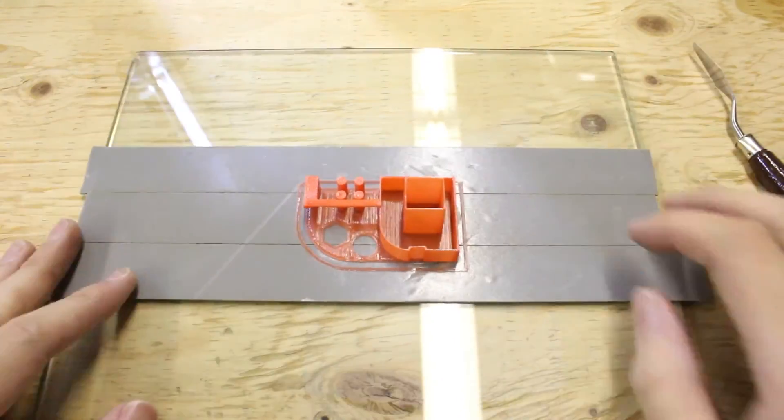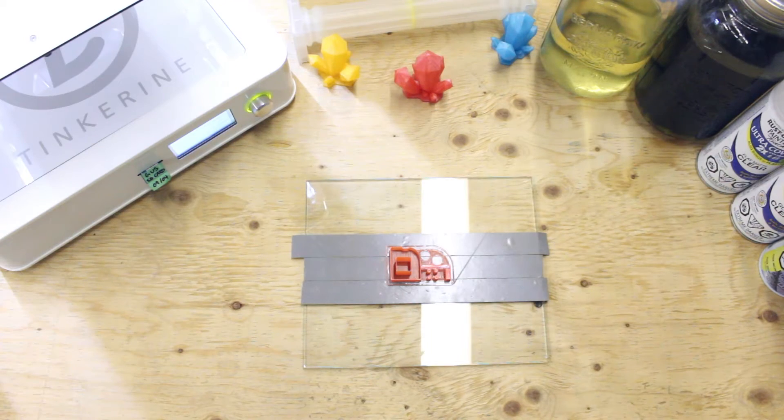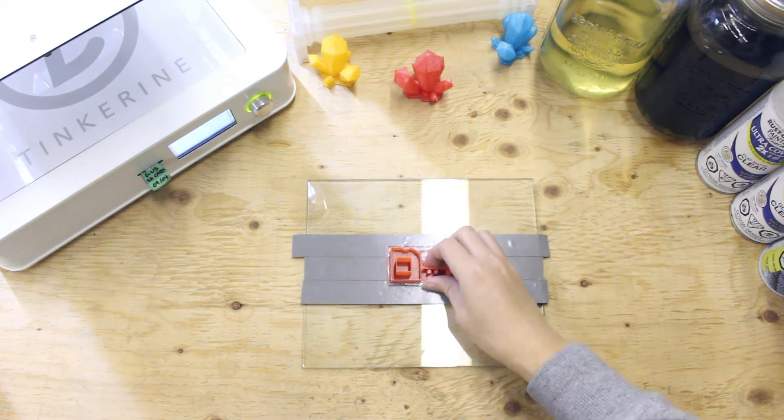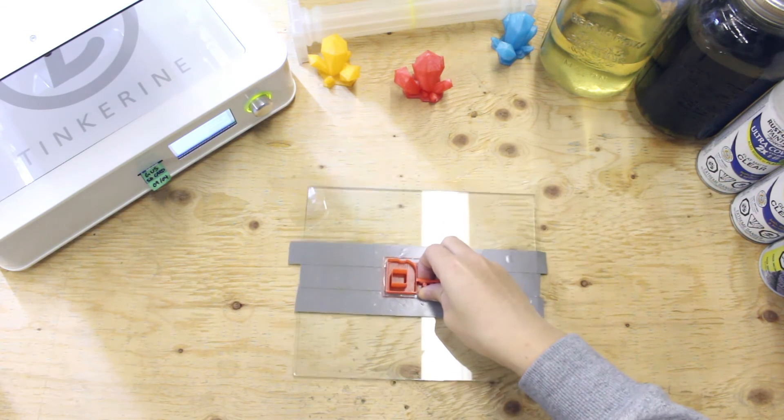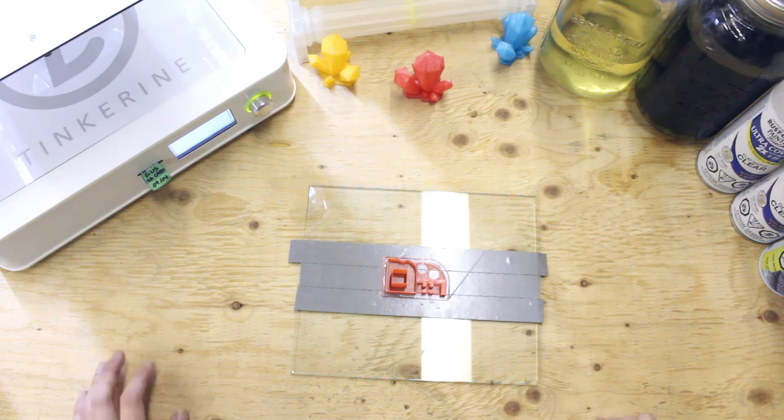Ok, I give up. Well, there we have it. We tried using double sided tape as a bed adhesive. And... It's a great adhesive, but a bad bed adhesive. I still can't remove the print.